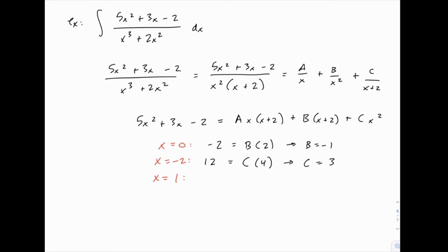And then for our third value, when x = 1, on the left side we have 5 + 3 - 2, which is 6. And on the right-hand side, we have A × 1 × 3 + B × 3 + C × 1.